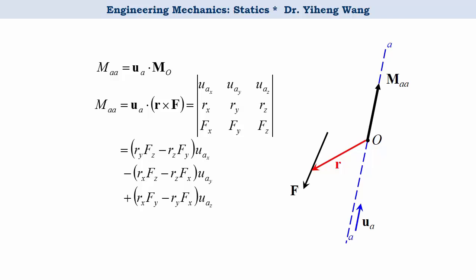Once again, U A is the unit vector along the A A axis about which you want to find the moment caused by the force vector F. And R is an arbitrary vector as long as it starts somewhere on the A A axis and ends somewhere on the force.